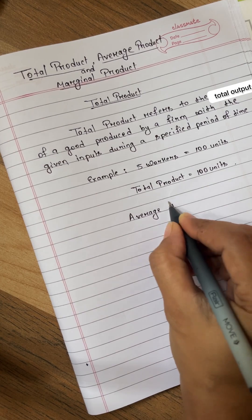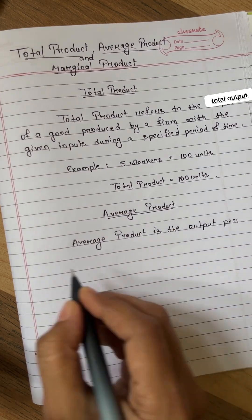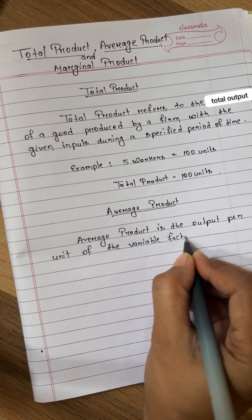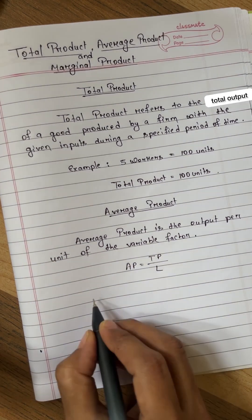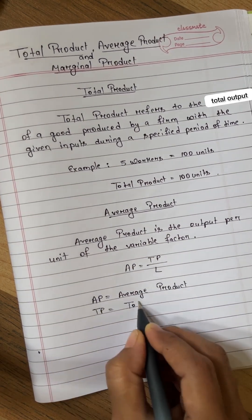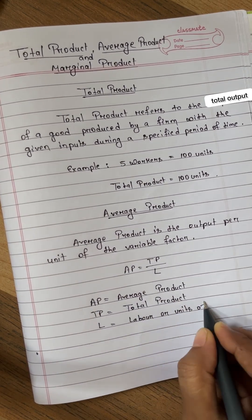Now let's see what is average product. Average product is the output per unit of the variable factor. It is calculated by AP is equal to TP by L. Here AP means average product, TP means total product and L means labor or unit of variable factor.